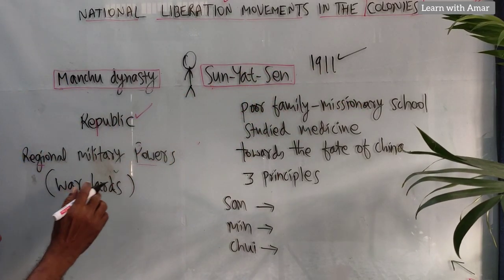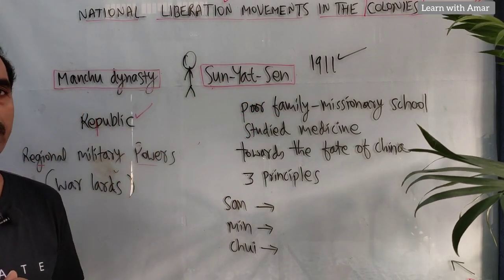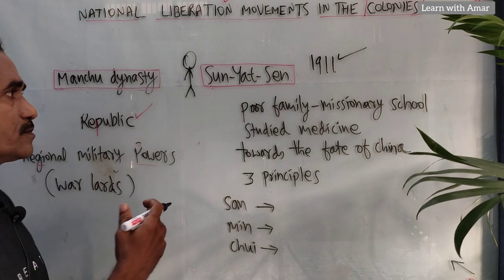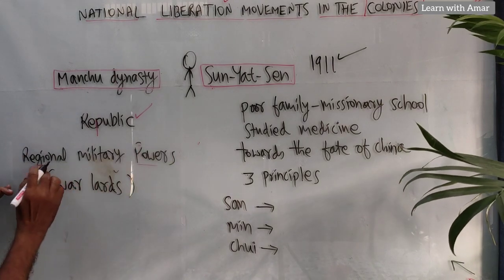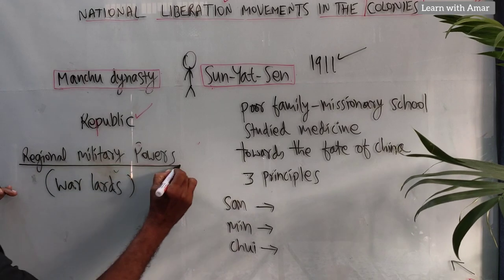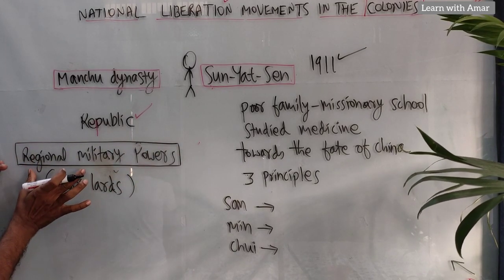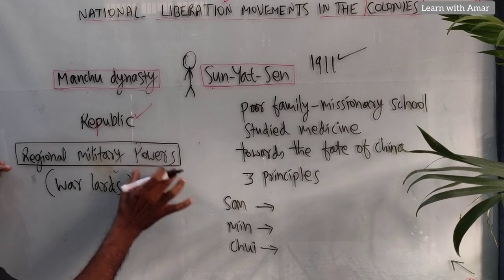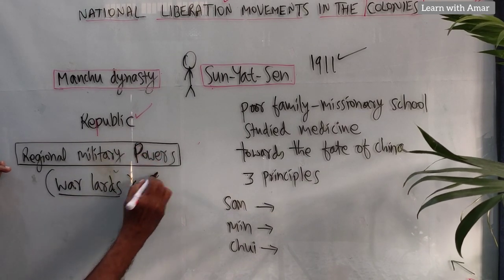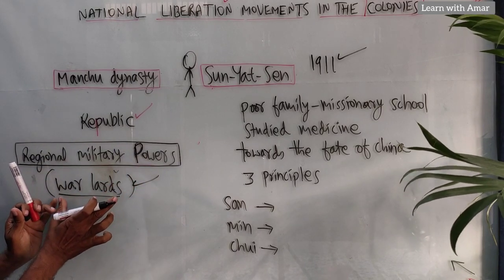But Sun Yat-sen was unable to form the government due to some reasons, so he was unable to come to power. Later, China came under the control of regional military powers known as warlords.